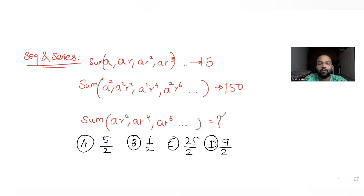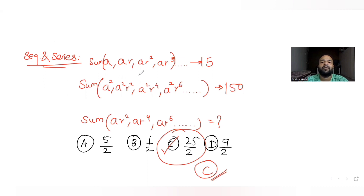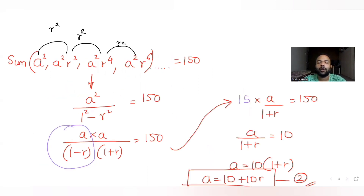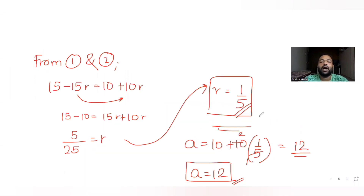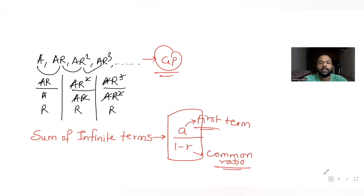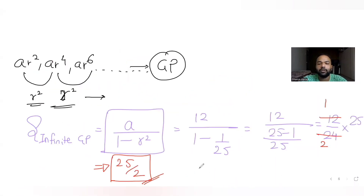The answer matches option C, which is 25/2. To summarize: we applied the single formula — sum of infinite terms of a GP equals first term divided by (1 minus common ratio) — to all three series. The first two series gave us two equations in a and r. Solving simultaneously, we got r = 1/5 and a = 12. Substituting into the third series gave the answer 25/2, which is option C.